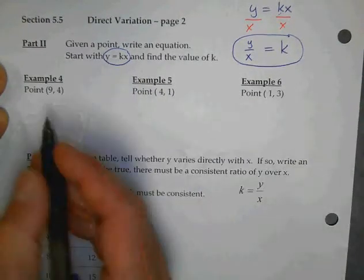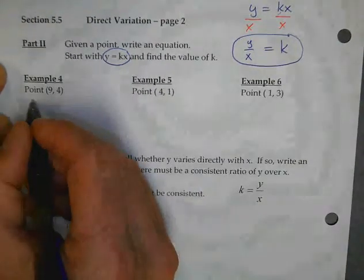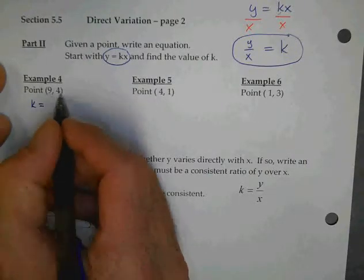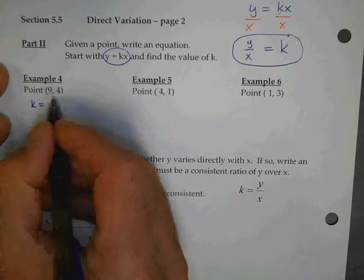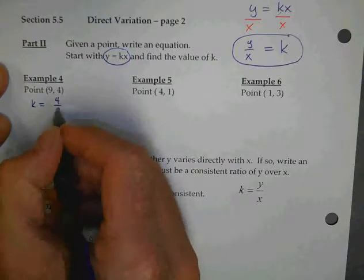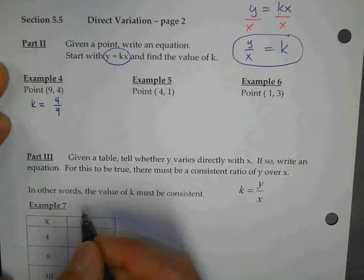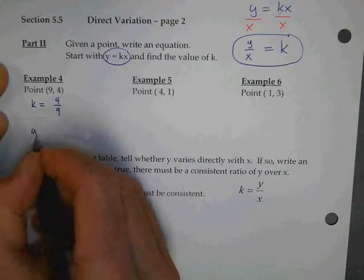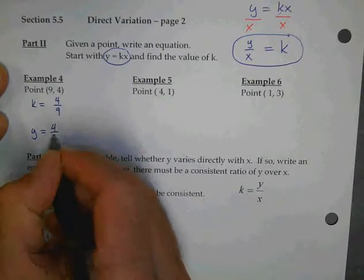So let's look at this first one. Let's find the value of k. Which one of these is y? The 4. So k equals 4 over 9. Y over x. And so I write my equation: y equals 4 ninths x.